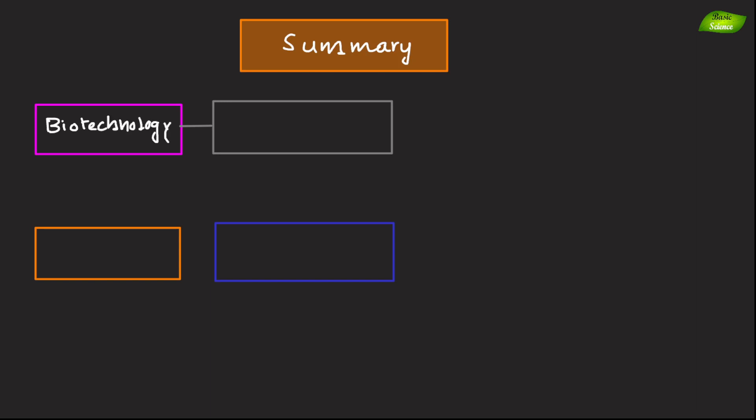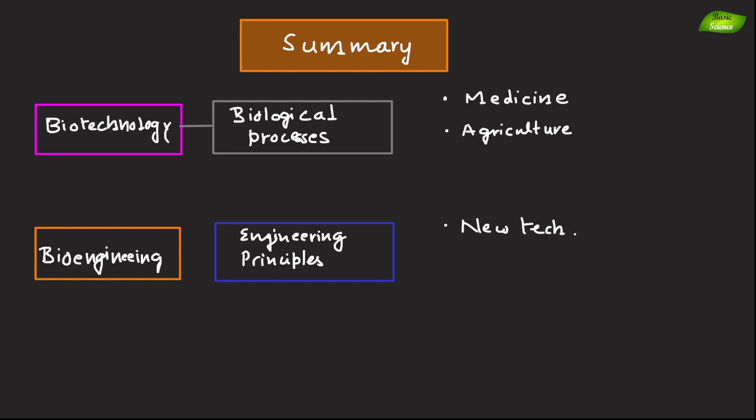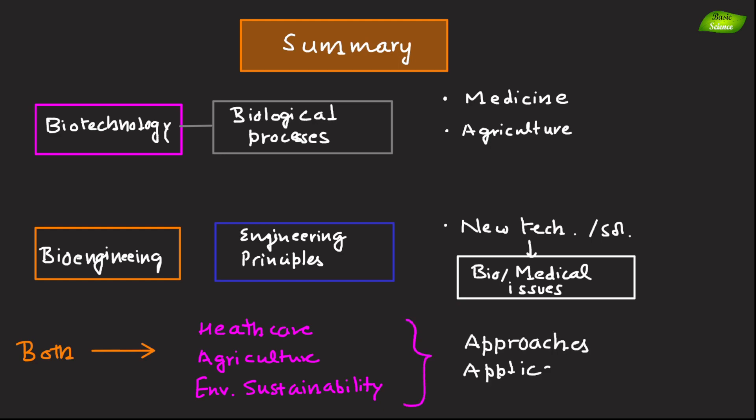In essence, biotechnology is focused on harnessing biological processes for practical applications like medicine and agriculture, while bioengineering uses engineering principles to design and develop new technologies and solutions for biological and medical problems. Both fields contribute significantly to advancing healthcare, agriculture, and environmental sustainability through their distinct approaches and applications.